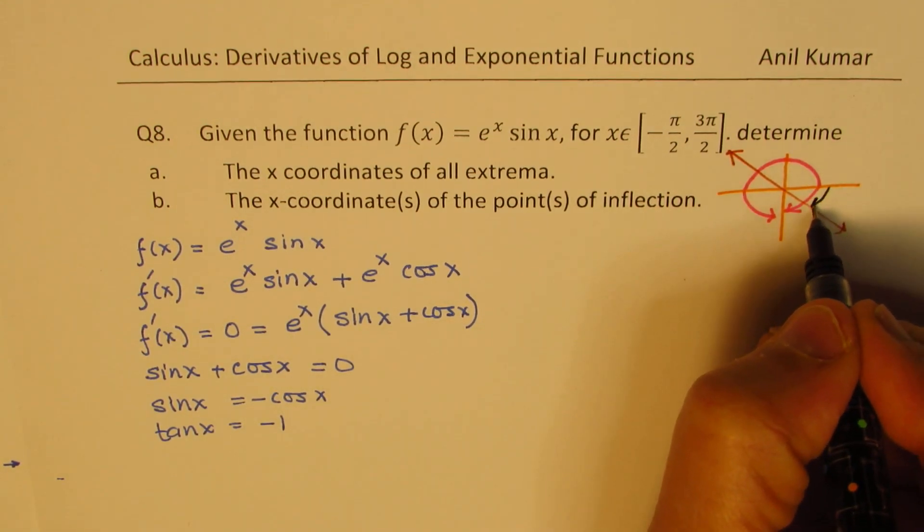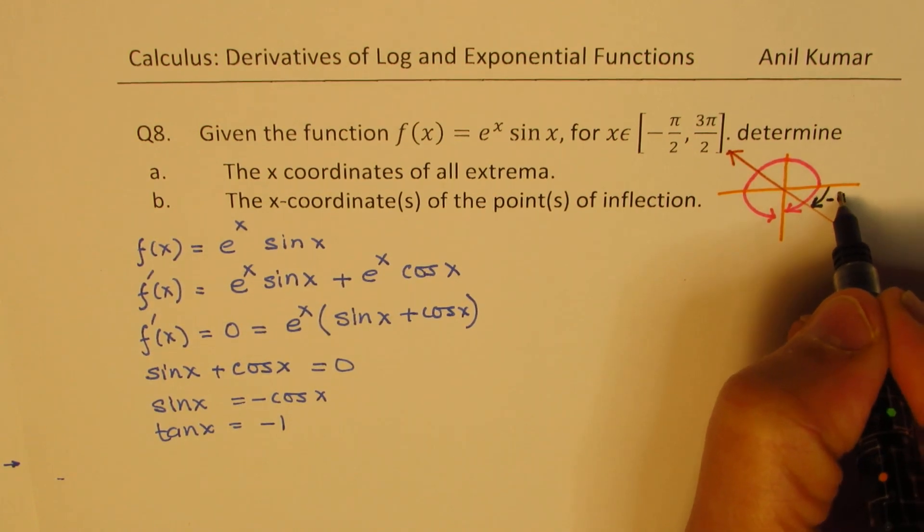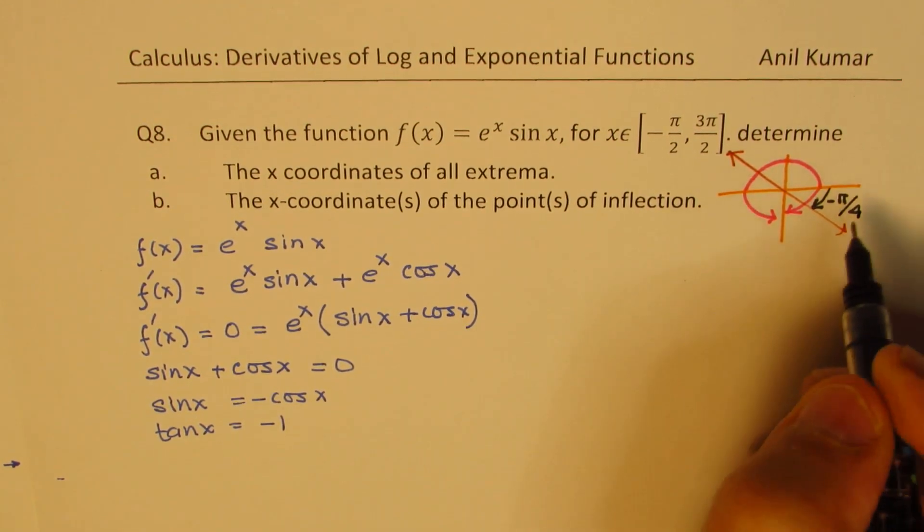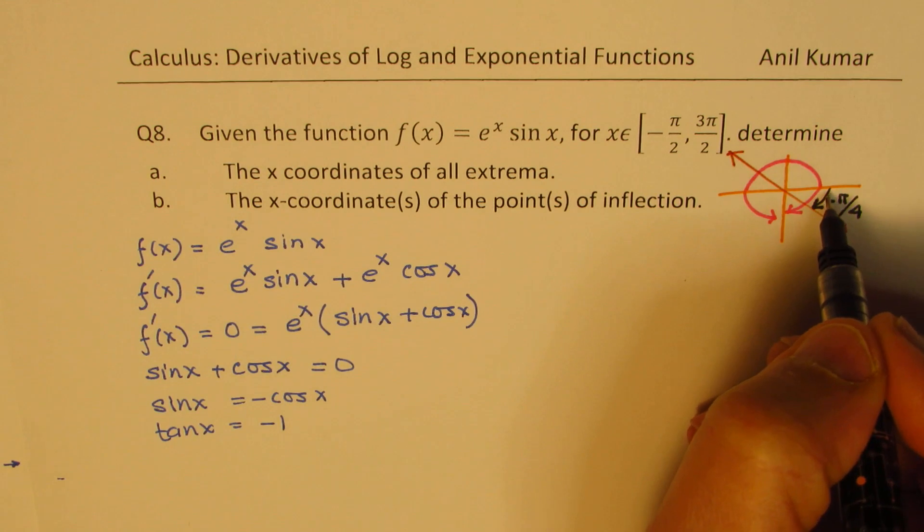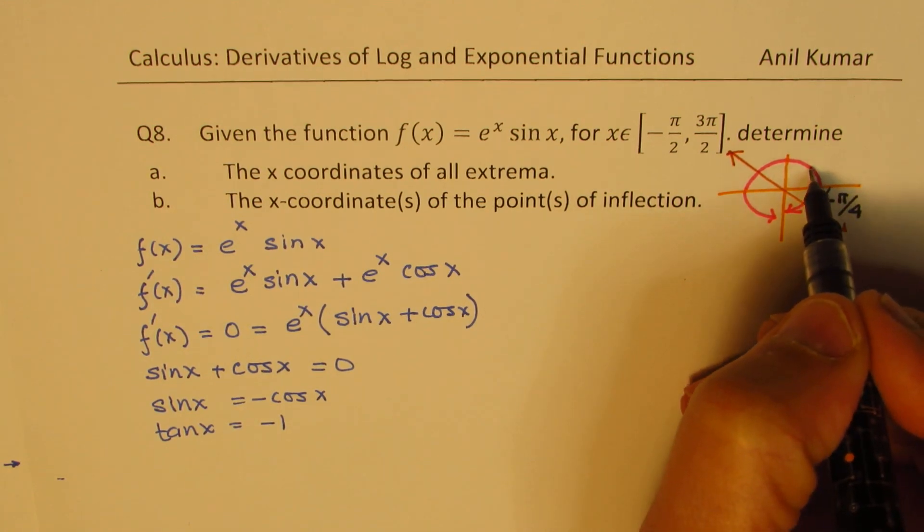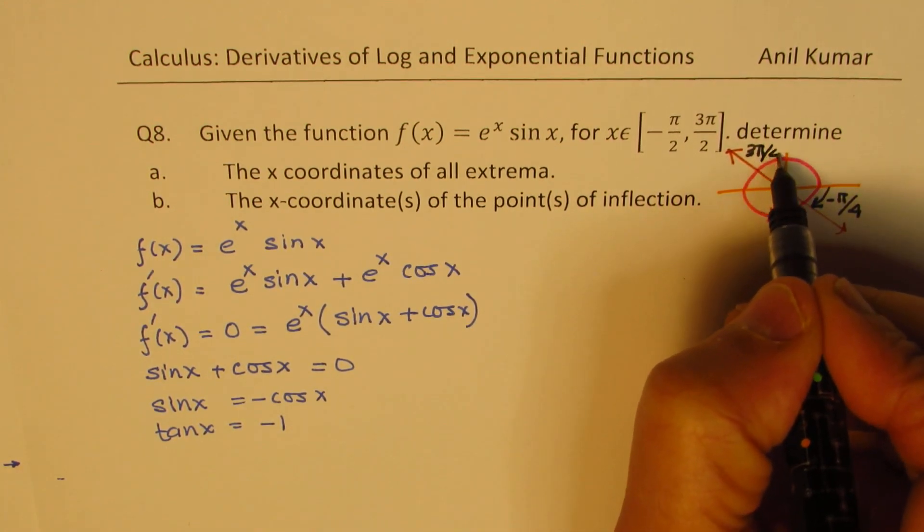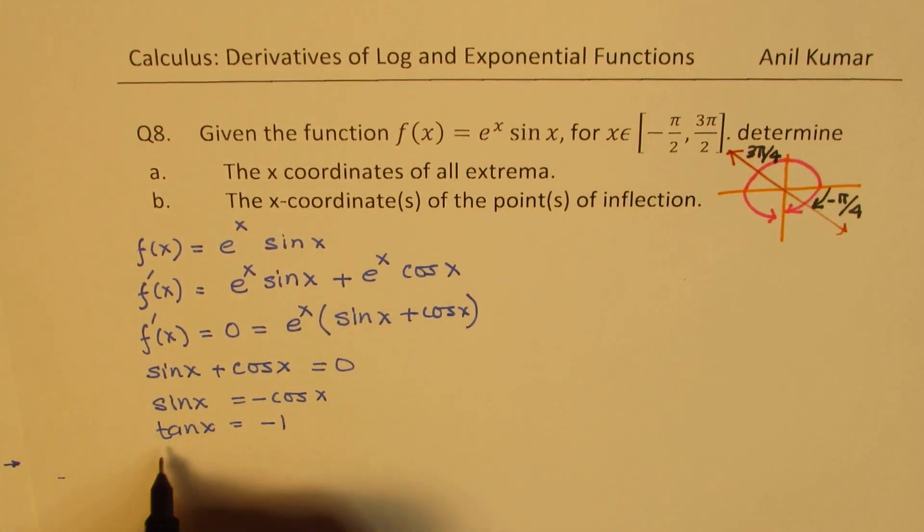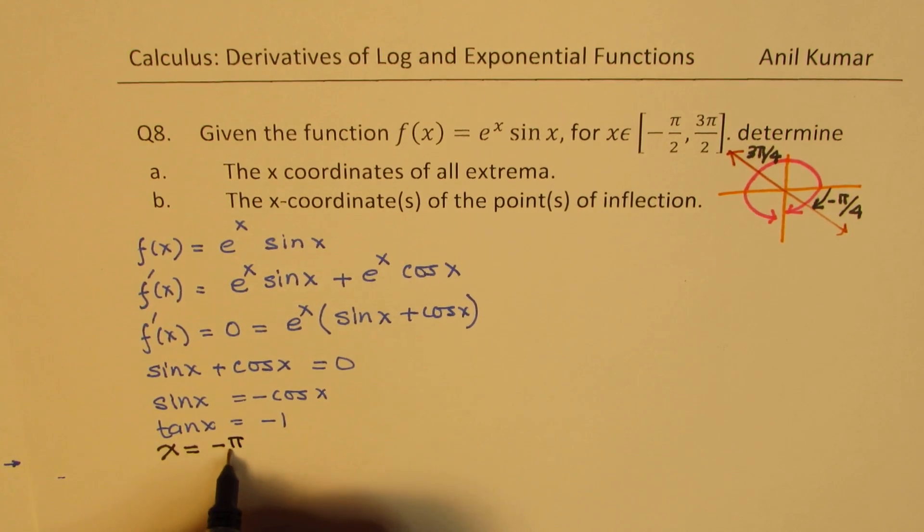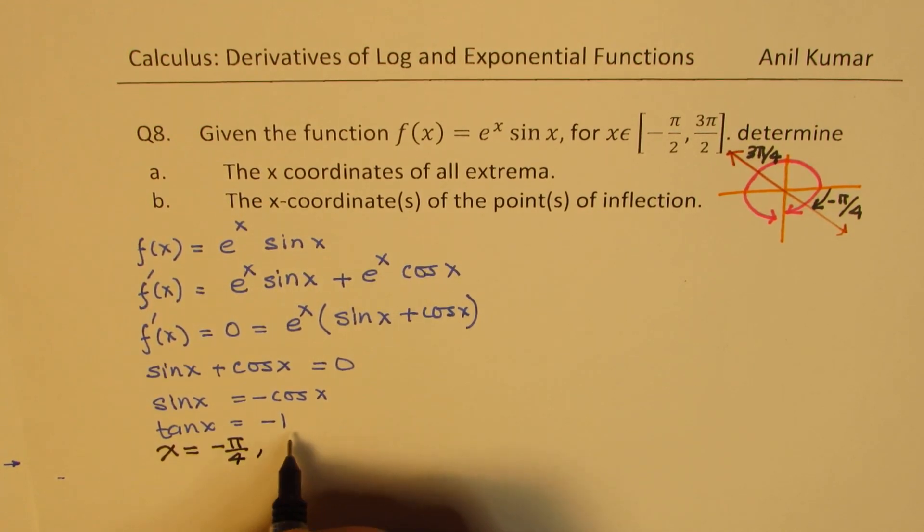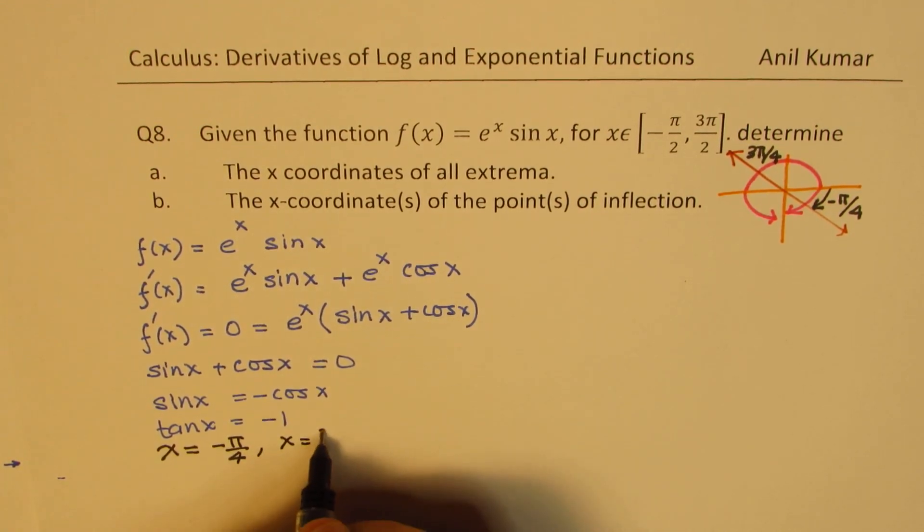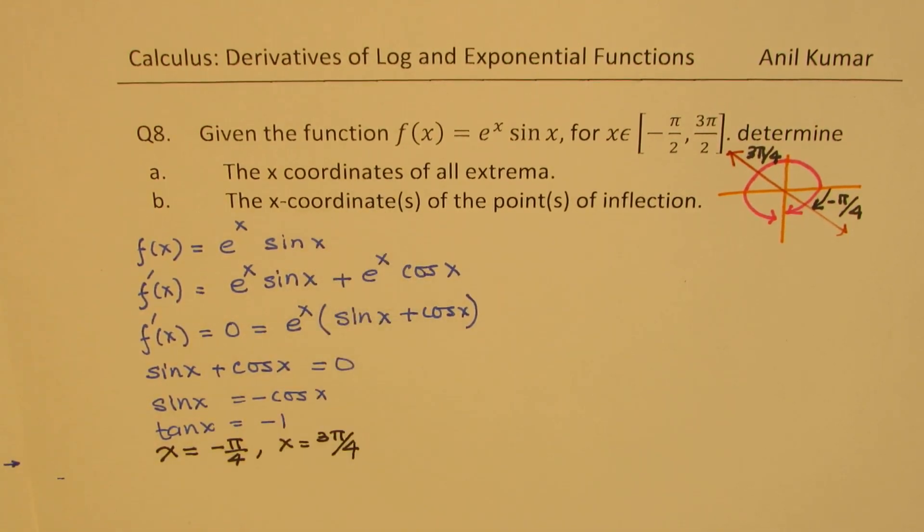One is minus π/4. And the other one is we have 1 π/4, 2 π/4, 3 π/4. So that means we have two solutions which is x equals to minus π/4 and we have x equals to 3π/4. So those are the two x coordinates for part a. So that is how we could do part a.